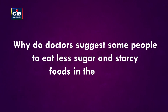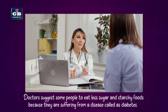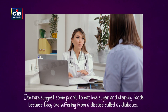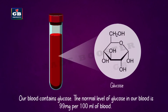Doctors suggest some people eat less sugar and starchy foods because they are suffering from a disease called diabetes. Our blood contains glucose, and the normal level of glucose in our blood is 99 milligrams per 100 ml of blood.